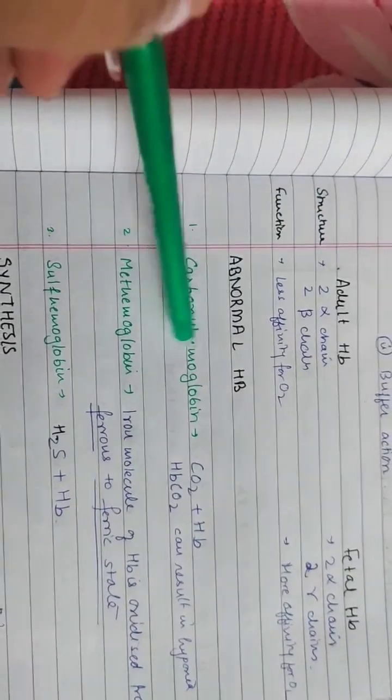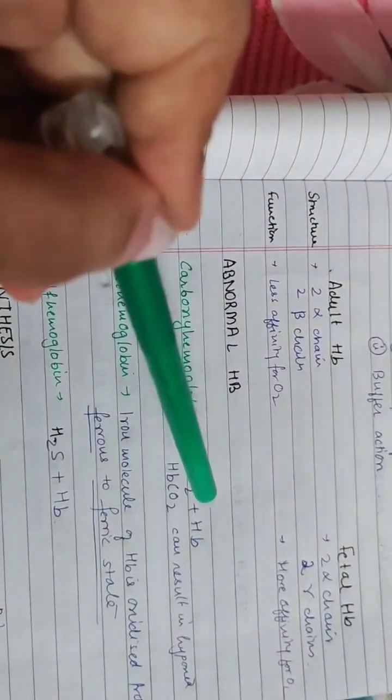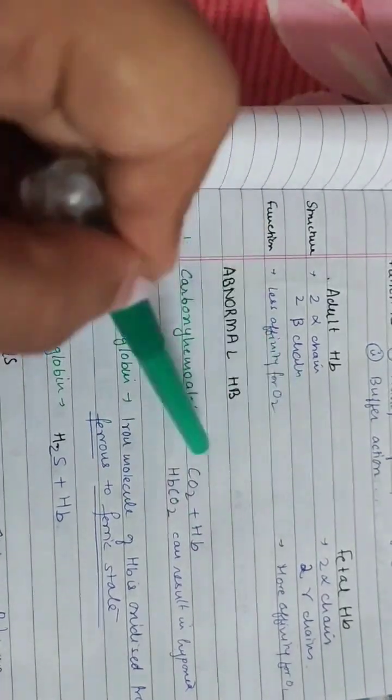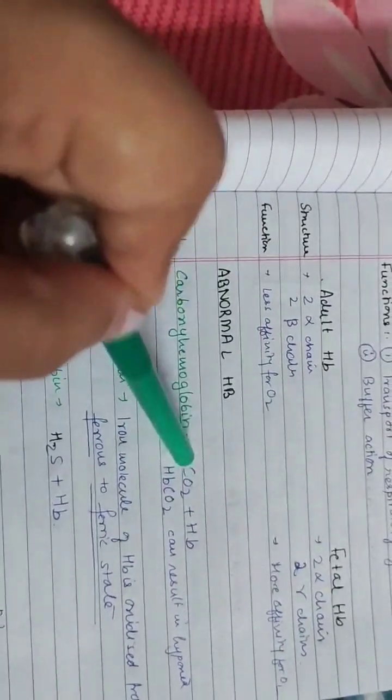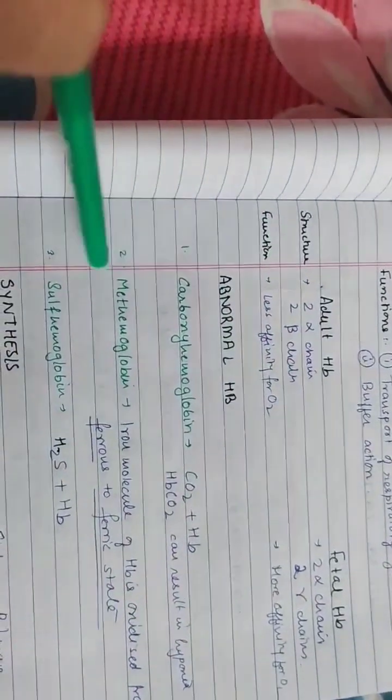There are three forms of abnormal hemoglobin. In carboxyhemoglobin, carbon dioxide combines with hemoglobin. Since hemoglobin has more affinity towards carbon dioxide than oxygen, it can cause hypoxia.